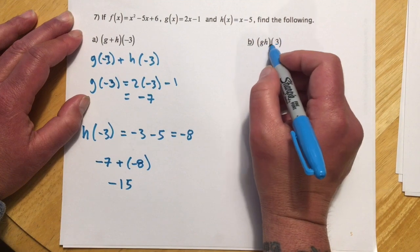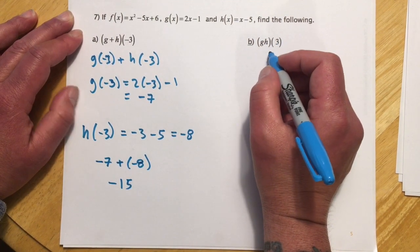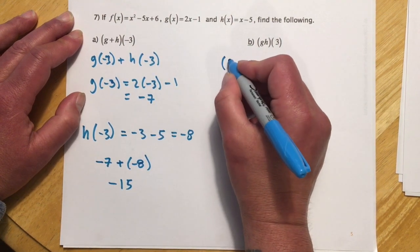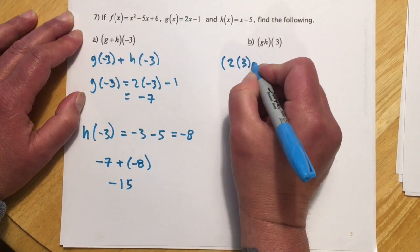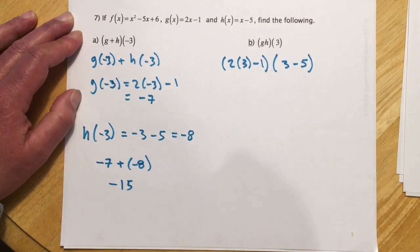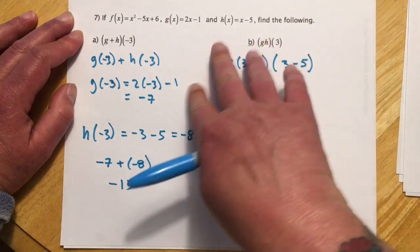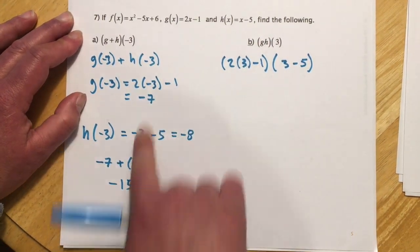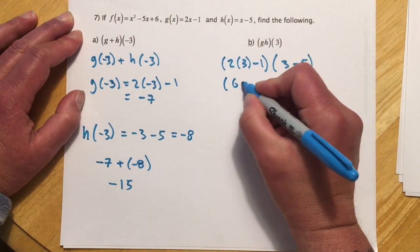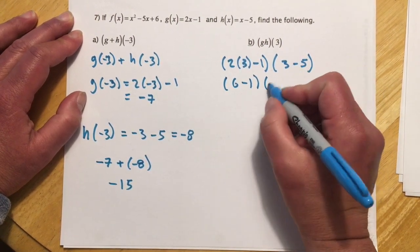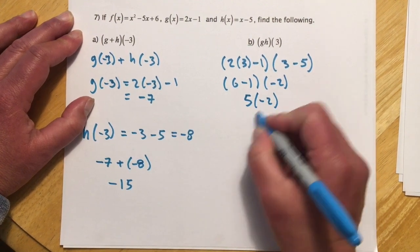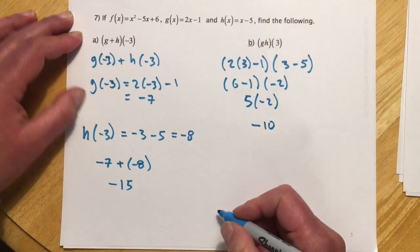This one is g times h evaluated at 3. I can do it as two separate pieces or substitute directly into the algebra and multiply. Either way, g of 3 is 6 minus 1 equals 5, and h of 3 is 3 minus 5 equals negative 2. So that's 5 times negative 2, or negative 10.